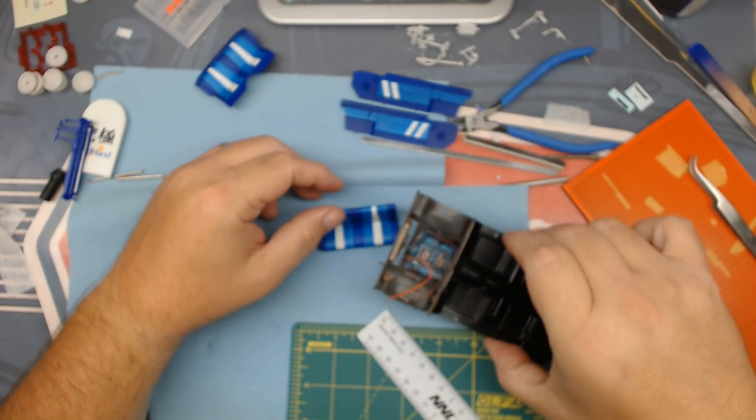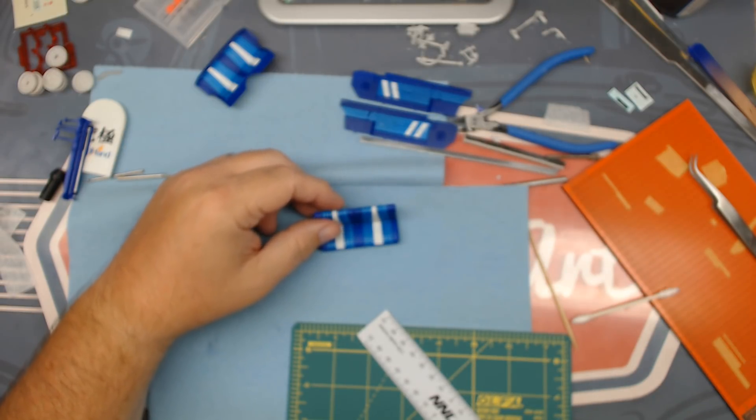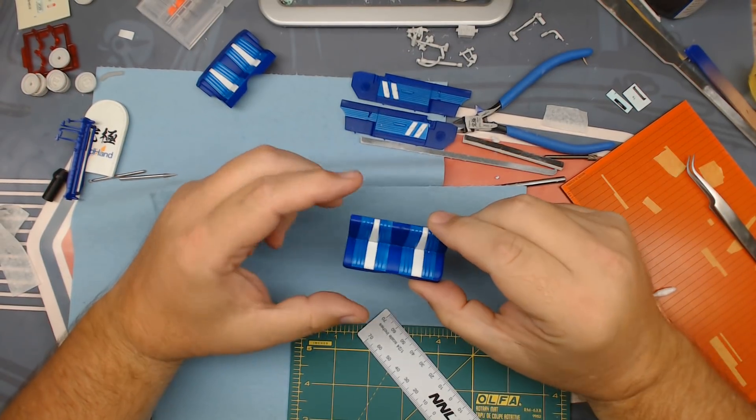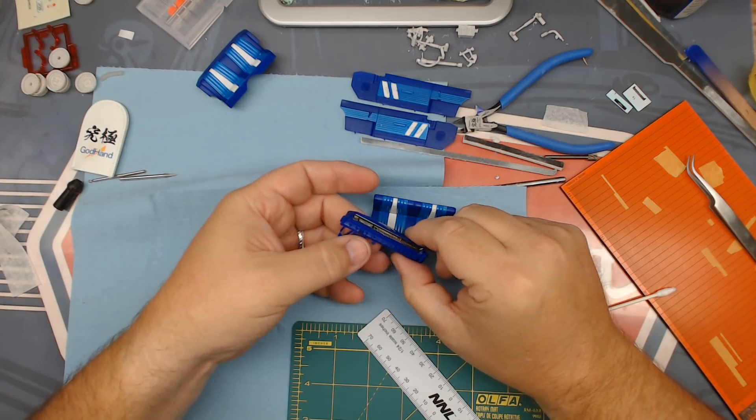So we're weathering this stuff all up. The dash we've been working on. I had a buddy talk me into using this Mission Models Chrome. And I've been playing with that stuff.